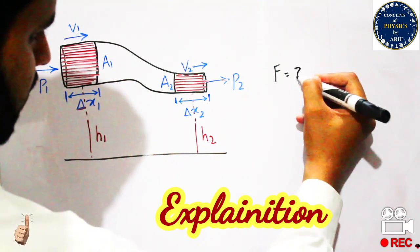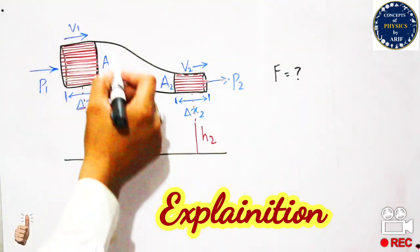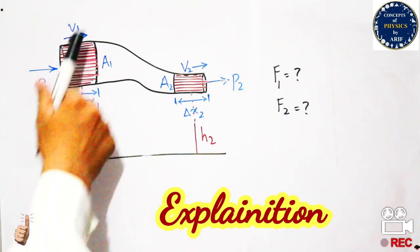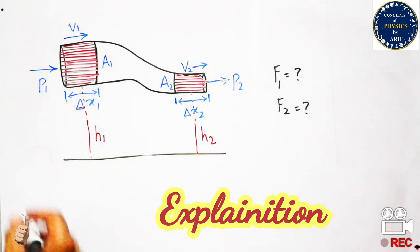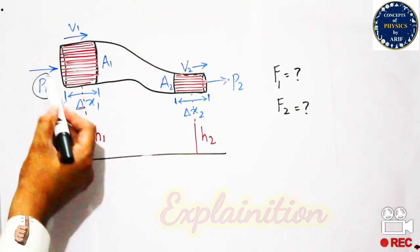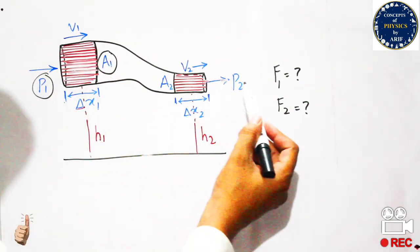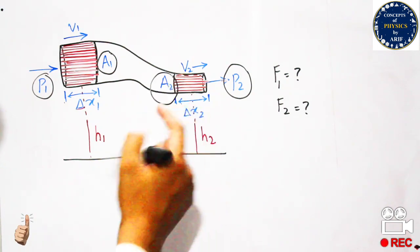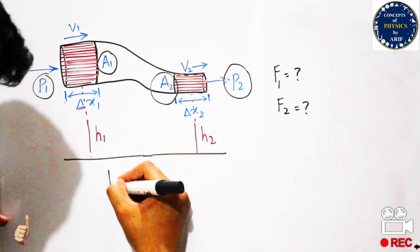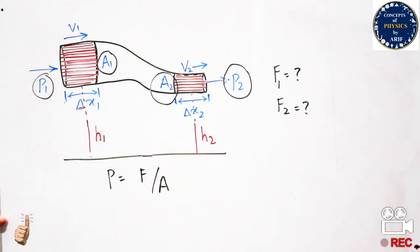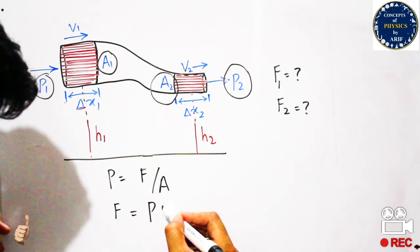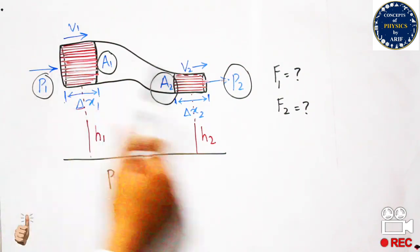First, we need to calculate the force in region one and region two respectively. The force for region one is f1 and the force for region two is f2. We know the formula for pressure, which is force per unit area, so force equals pressure multiplied by area.